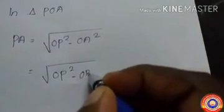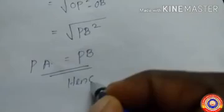This equals the square root of OP squared minus OB squared, replacing OB for OA, because OA and OB are equal — they are the radii of the circle. This equals PB, the square root of OP squared minus OB squared. Hence PA equals PB, which completes the proof.